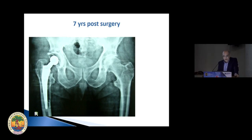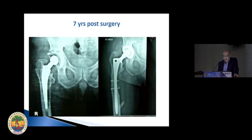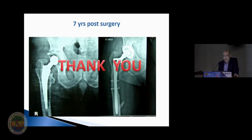One more patient — you can see there's no osteolysis but the cup is well cemented, while the stem is completely loose with massive osteolysis. This is because of motion of the stem due to poor cementing. That required revision with a long stem. These were the days when 32 and 36-millimeter heads were not available in India. Thank you.